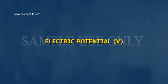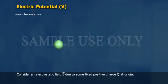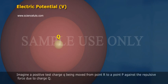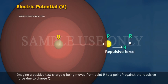Electric Potential V. Consider an electrostatic field E bar due to some fixed positive charge Q at origin. Imagine a positive test charge q being moved from point R to a point P against the repulsive force due to charge Q.